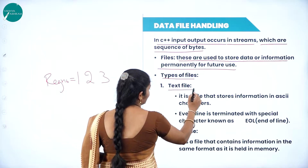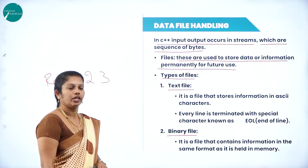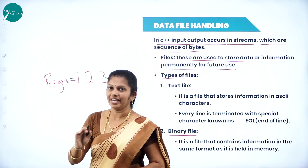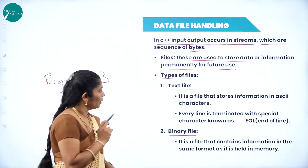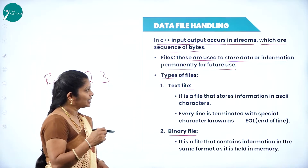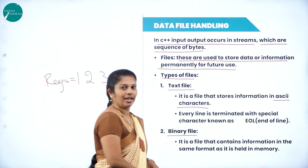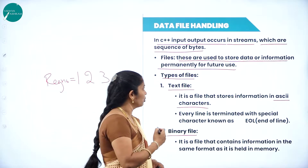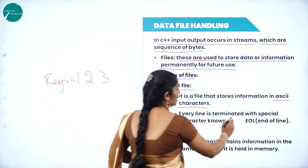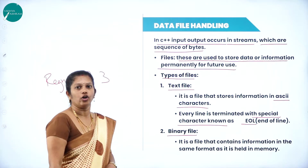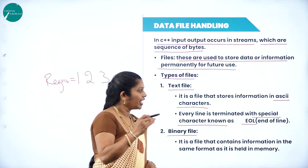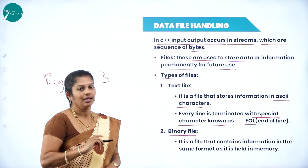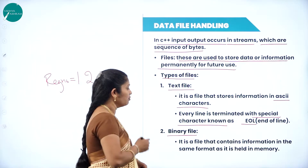There are two types of files: text file and binary file. A file is a basic storage unit required to store both input data and output data. In a text file, information is stored especially in ASCII format — ASCII stands for American Standard Code for Information Interchange. Every line is terminated with a special end-of-line character.